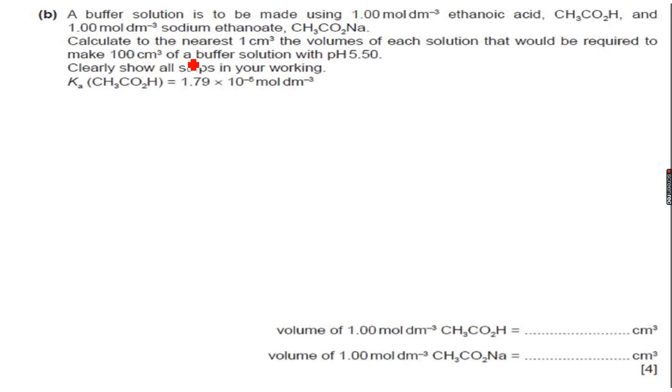So now we have an exercise on buffer solutions. The first question is: a buffer solution is to be made using 1.00 mol dm⁻³ of ethanoic acid CH₃CO₂H and 1.00 mol dm⁻³ of sodium ethanoate CH₃CO₂Na. Calculate to the nearest 1 cm³ the volumes of each solution that would be required.